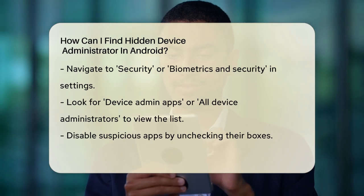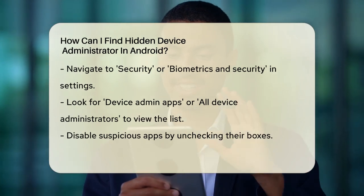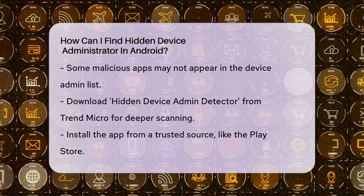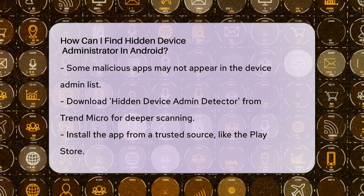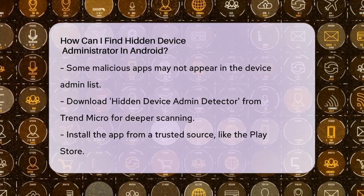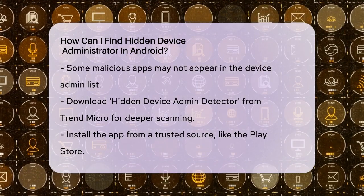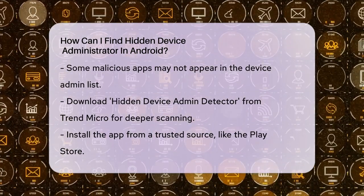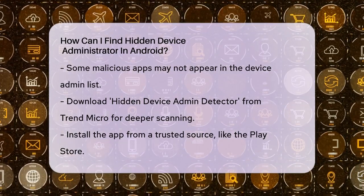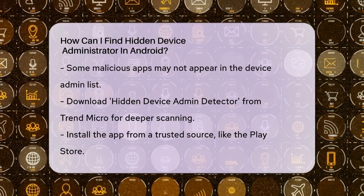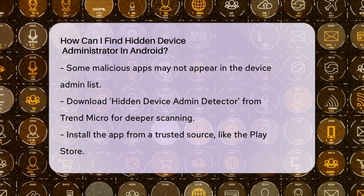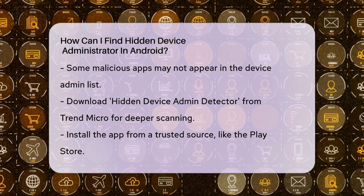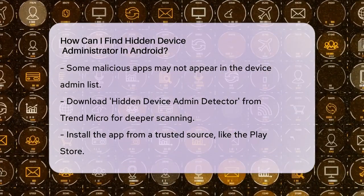However, some malicious apps might not show up here. For those hidden apps, you'll need a third-party tool called the Hidden Device Admin Detector from Trend Micro. Download and install this app from a trusted source like the Play Store or a secure link. Once installed, open the app and tap the Click Here to Scan button. The app will scan your device for any hidden device administrator apps. If the scan finds any hidden apps, it will show you an interface where you can deselect them to deactivate their administrator privileges. This step is crucial because it prevents these apps from causing any further harm.